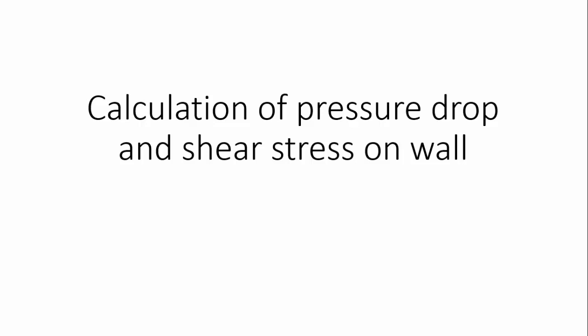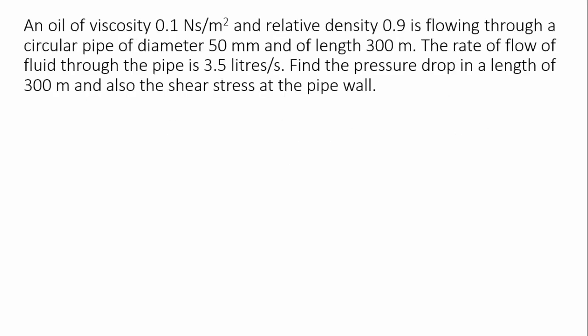In this video, we will calculate the pressure drop in the pipeline and also the shear stress on the wall. An oil of viscosity 0.1 N·s/m² and relative density 0.9 is flowing through a circular pipe of diameter 50 mm and length 300 meters. The rate of flow of the fluid through the pipe is 3.5 liters per second. Find the pressure drop in a length of 300 meters and also the shear stress at the pipe wall.